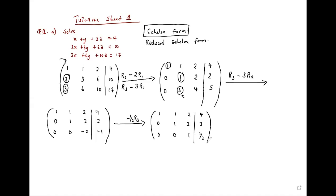You've seen it's now in the echelon form, and so far we know the value of z. z is equal to 1/2. This is 0x, 0y plus z is equal to half, so z is equal to half.